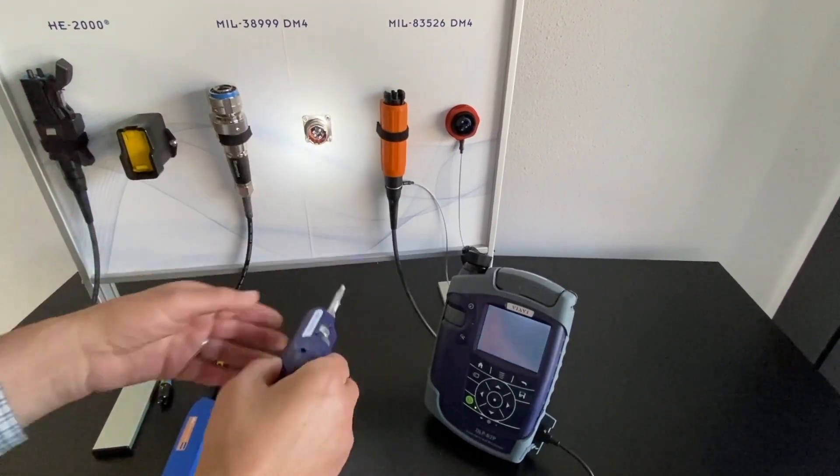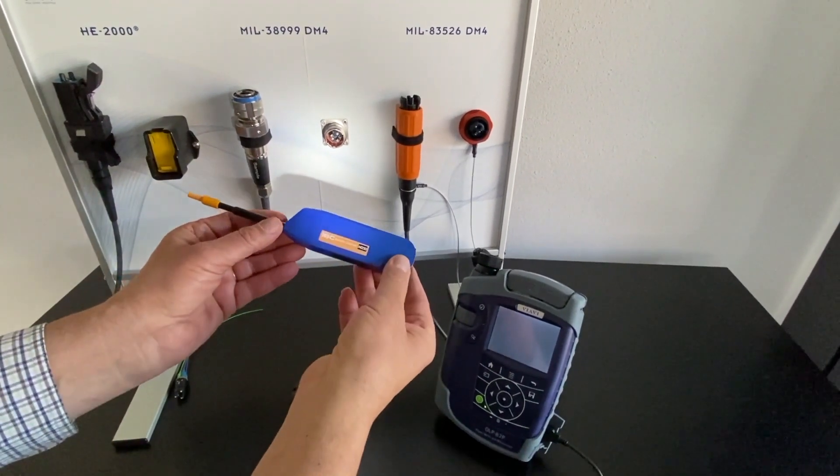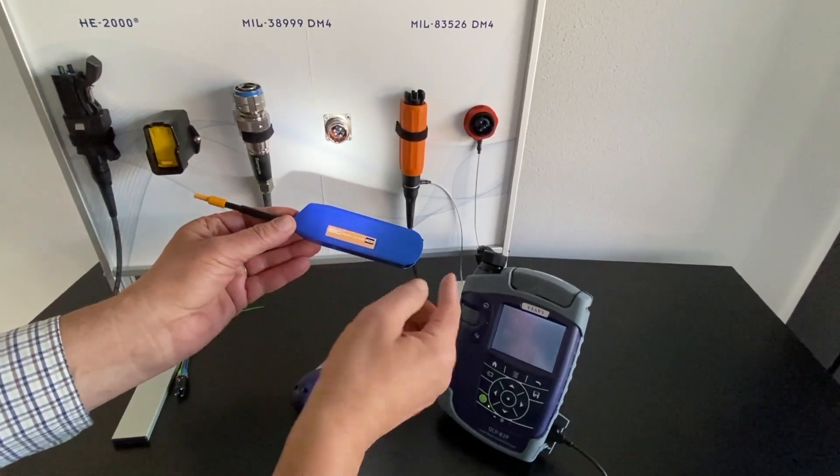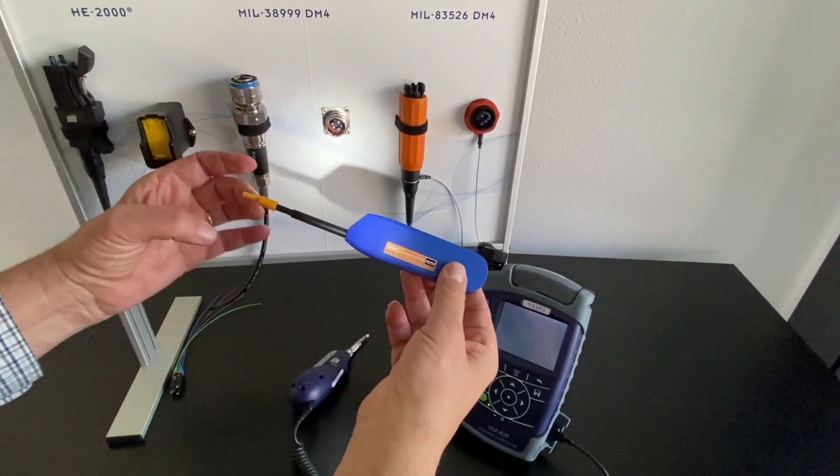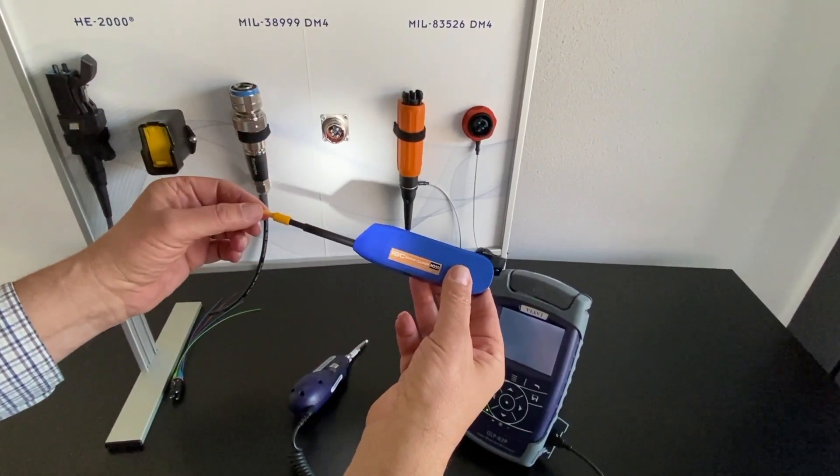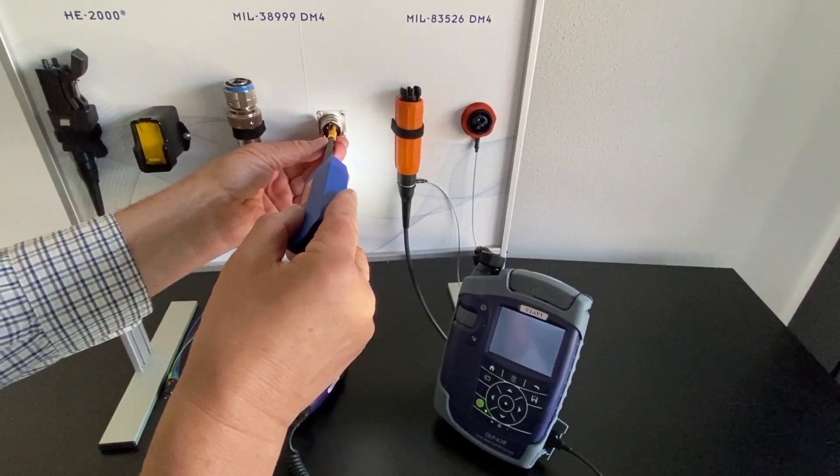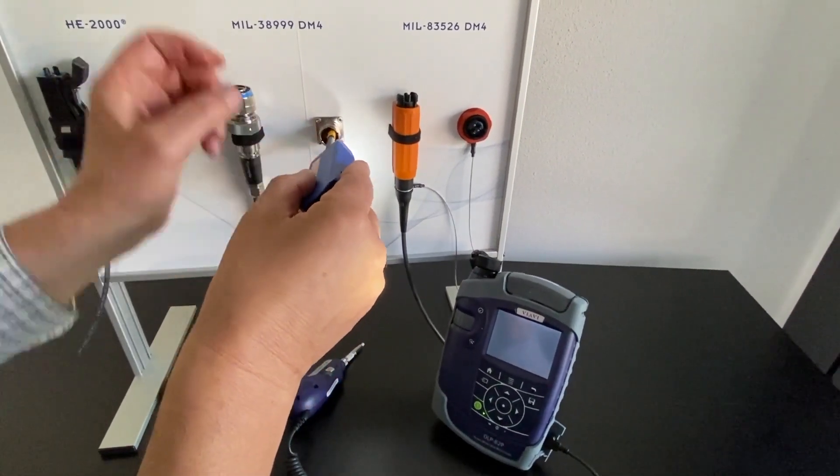I will now try to clean the end face of the ferrule. I have the IBC 2.5 mm. Just take note that that has been reworked from Diamond in order that it fits in the DM4 inserter. So, there you are.